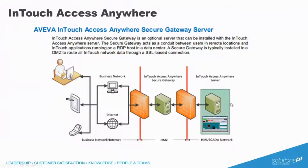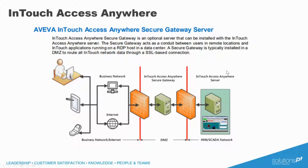Beginning with the first option, we've got InTouch Access Anywhere. This is an optional server component that's included within the base InTouch installation, and it enables you to remotely view a running InTouch application from a desktop or a mobile device through any HTML5-compatible browser. You view and control the application through a remote desktop session that's rendered in a secure web browser without requiring a separate client application. On the screen is a simple breakdown of the components and how they fit into an architecture. Starting on the right in the control network, you've got your RDS server, which will be running your InTouch Access Anywhere and hosting your actual InTouch application.